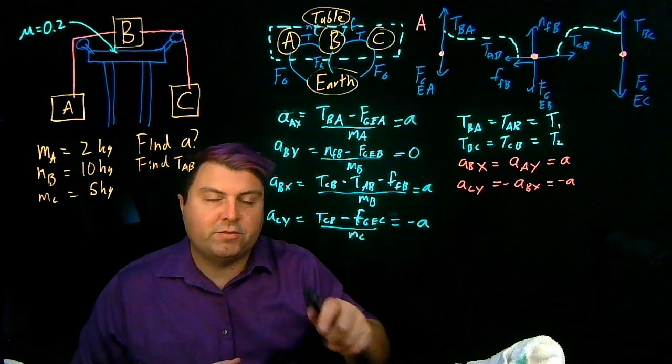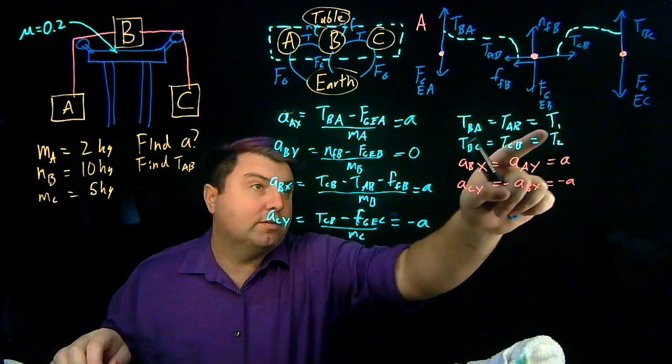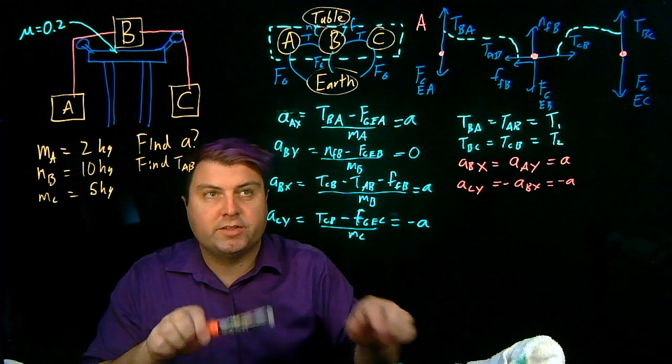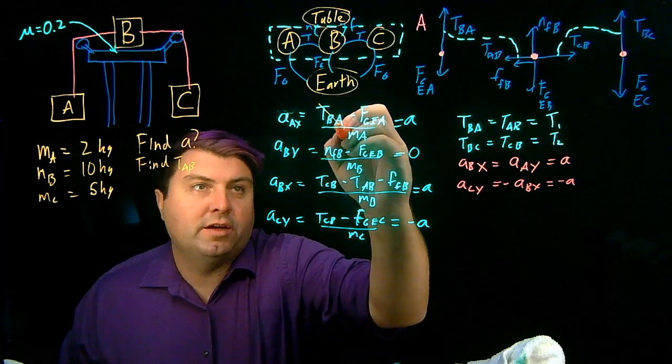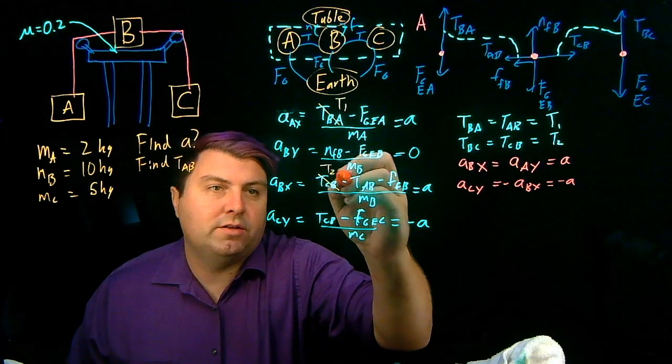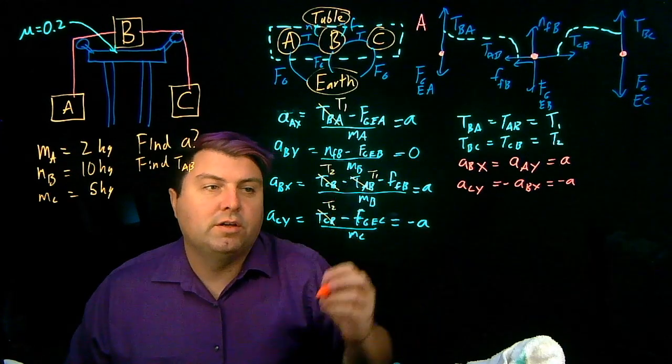And now we can do a little bit of trickeration with our T1s and T2s just to kind of do a quick replace of this, so that this TBA is going to be T1, this TCB, T2, TAB, T1, TCB, T2.